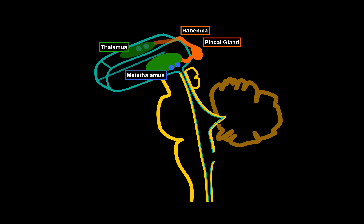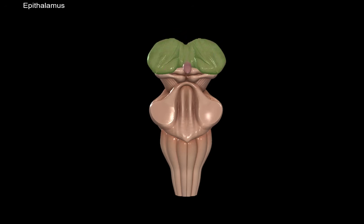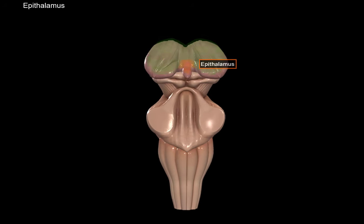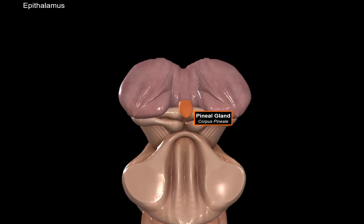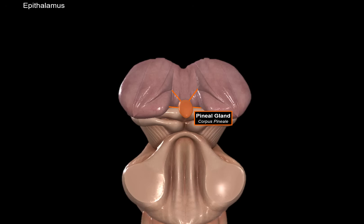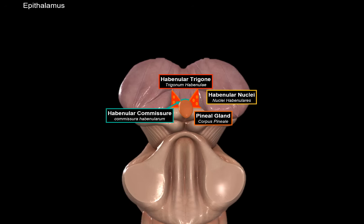Next is the epithalamus, a very small area consisting mainly of the pineal gland. The pineal gland produces melatonin — the hormone that regulates the sleep-wake cycle. It's attached to the posterior part of the thalamus. On either side of the pineal gland is a triangular structure called the habenular trigone, containing habenular nuclei considered part of the limbic system. Between the habenular trigones you'll find the habenular commissure connecting them, and also the posterior commissure.